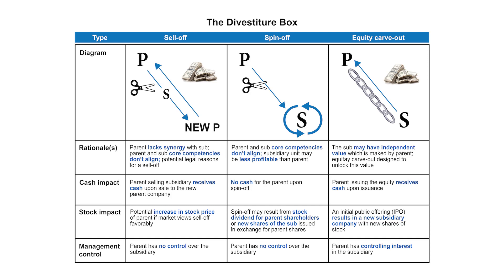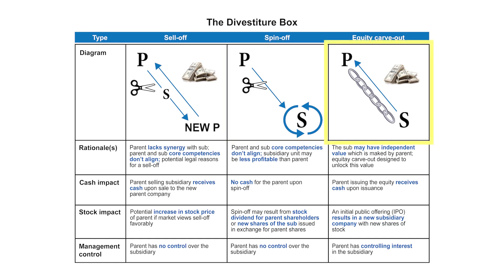Now let's look at the detail here in our divestiture box. With that sell-off — no potential, it's underperforming — the scissors represent the releasing of the subsidiary from control of the parent to somebody else. We sell it off, and the good news is we get some cash. A spin-off — there's no cash inflow, a release of the subsidiary from the parent, but this time there's no cash going back to the parent. The equity carve-out — where there's a lot of value — we're going to get some cash, but we also have control. That's why we have the chain: the control, the chain, plus the cash.